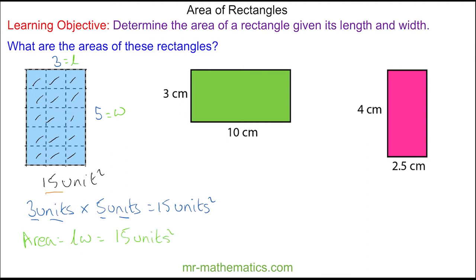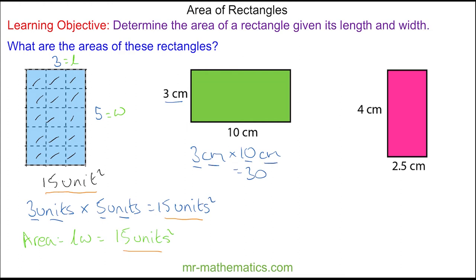So these are three different ways of working out the area of a rectangle. To work out the area of the green rectangle we're going to multiply 3 by 10. We can't count the squares because the squares are hidden, so we're going to have 3 centimeters multiplied by 10 centimeters.